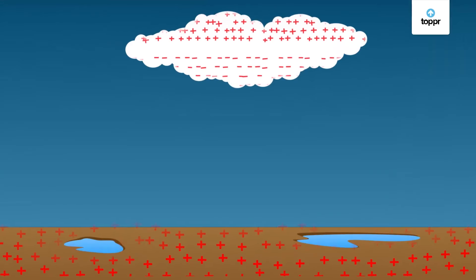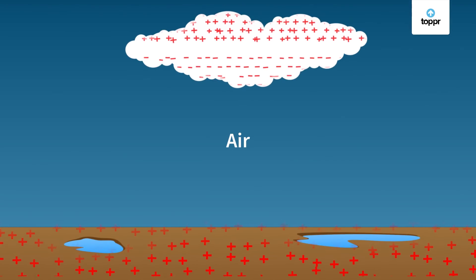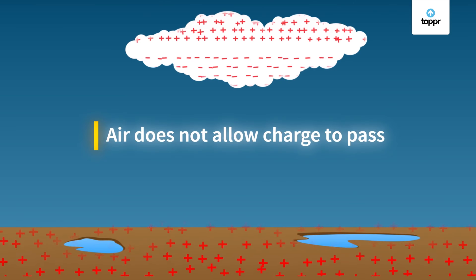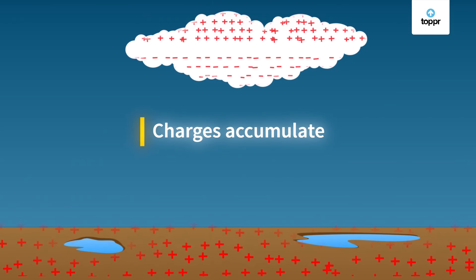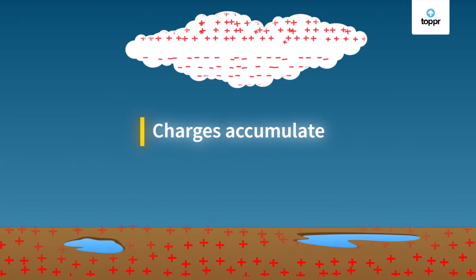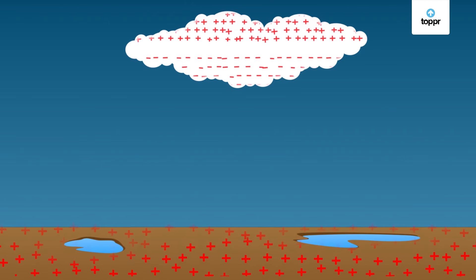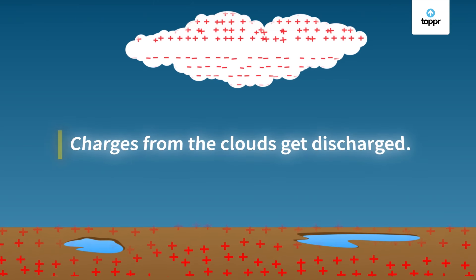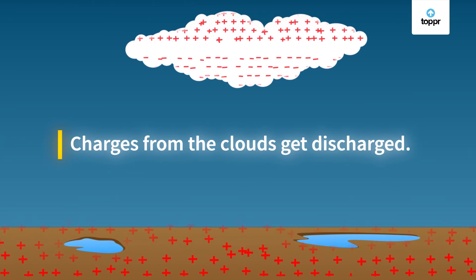Since these charges are oppositely charged, they should attract each other and make each other neutral. Then why does that not happen? That is because there is air between these particles, and air does not let electric charges flow through easily. So the charges go on accumulating without becoming neutral. When the magnitude of the accumulated charges becomes so large that it can overcome the resistance of air, they get discharged suddenly.